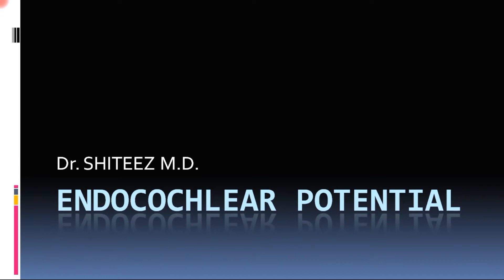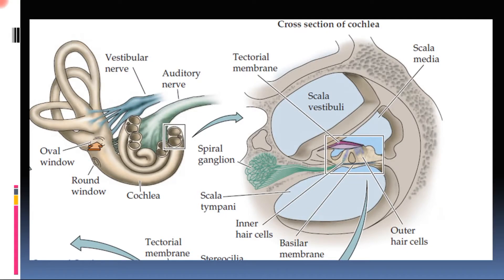Let us get started. We will briefly deal with the anatomy of the cochlea and then jump straight into the endocochlear potential. Basically, the cochlea as you can see in the diagram is a coiled tube — a coiled structure with three tubes coiled side by side. If you see the cross section, those three tubes make three compartments.